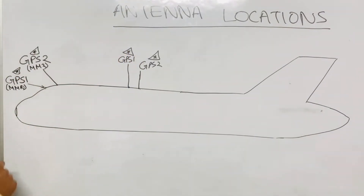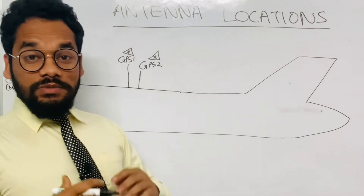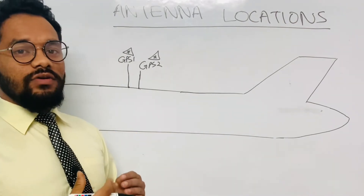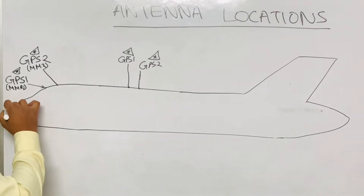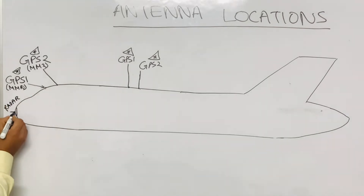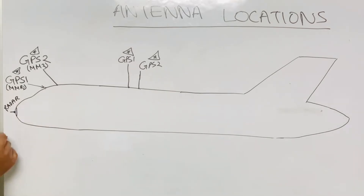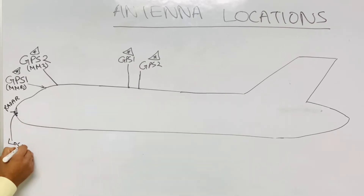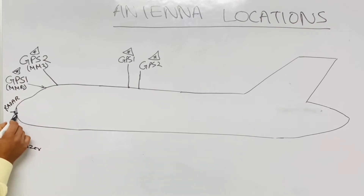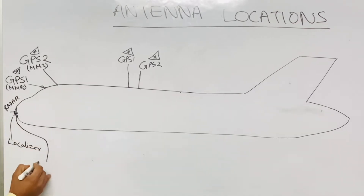At the most forward part of the aircraft is the nose section. The antenna at the very front is the radar antenna — remember, 'nose roars' and roar starts with R for Radar. The radar antenna is present inside the radome in the nose section. Also in the nose section we have the localizer antenna and the glide slope antenna, marked here with a dot.